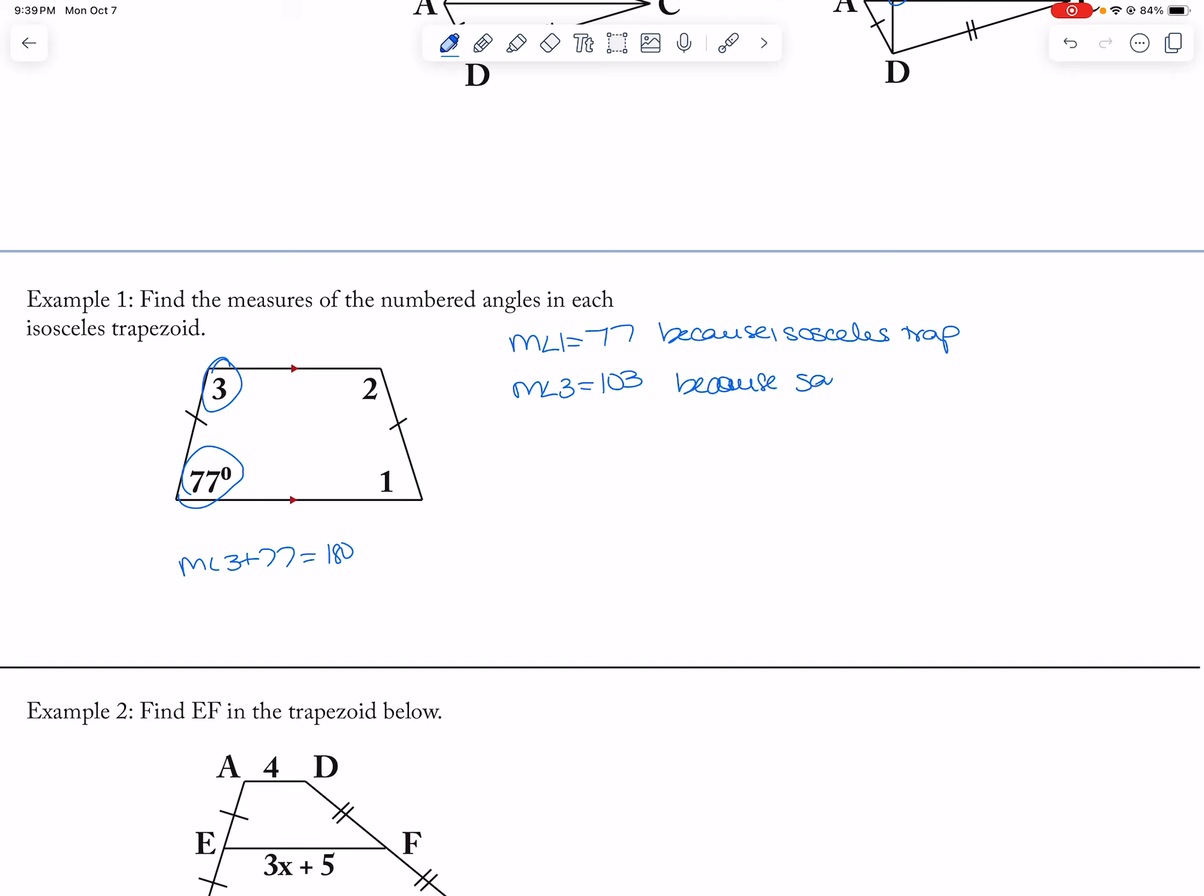Same side interior. And then measure of angle two, oops, is equal to 103 because, again, it's an isosceles trapezoid.